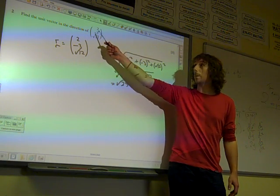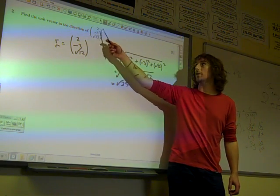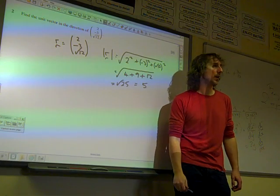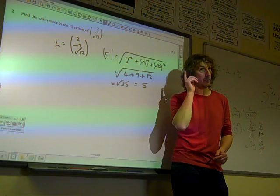So this is a vector of length 5 in the direction of 2, minus 3, root 12. We want a unit vector, vector of length 1.